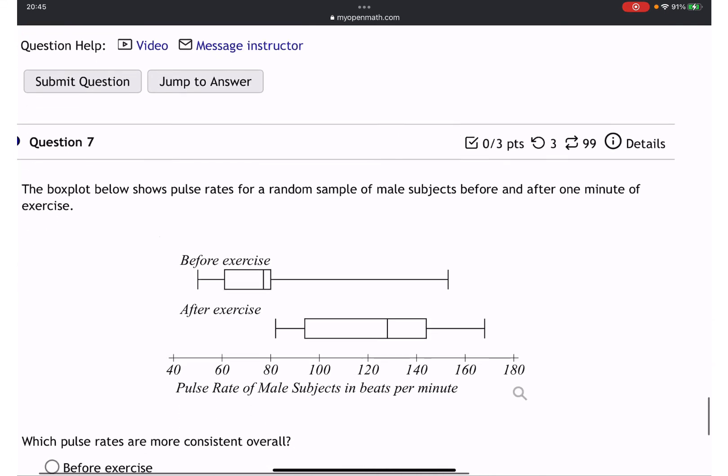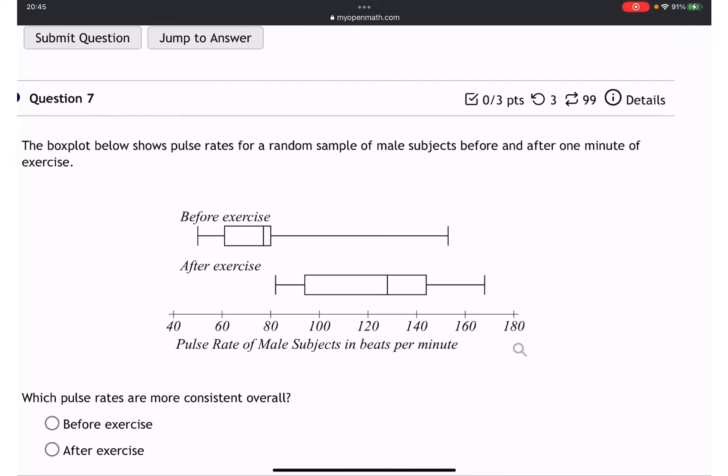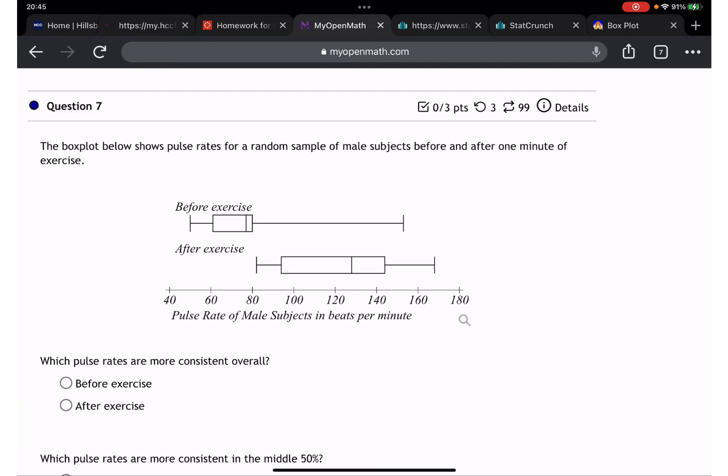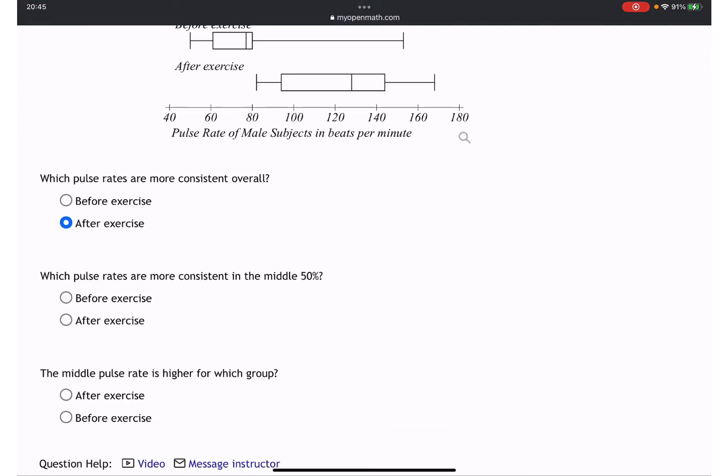Next - the middle pulse rate is higher for which group? Pulse is higher on which one? We are looking 100 here, 140. But before exercise is around 80 something, and after exercise it's going to be 140 and higher, which means it's going to be after exercise. Let's check - correct, correct, correct.